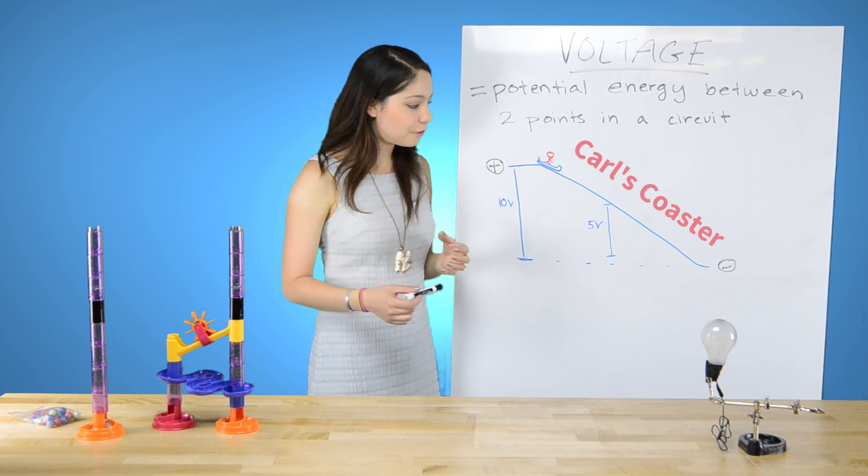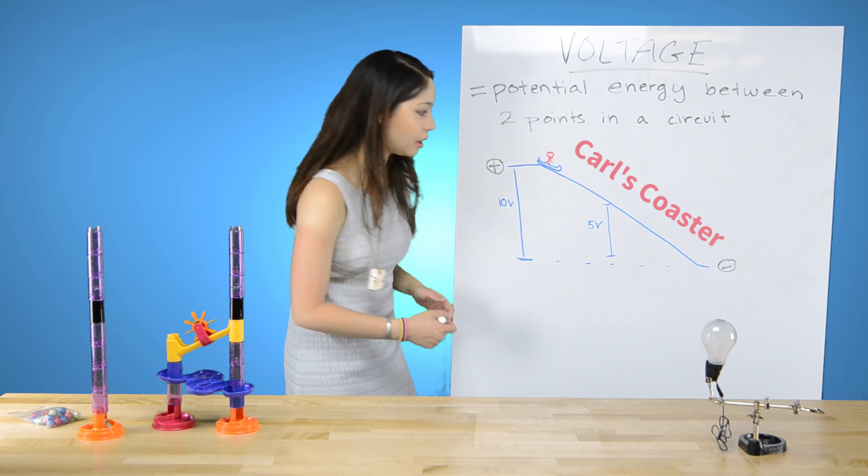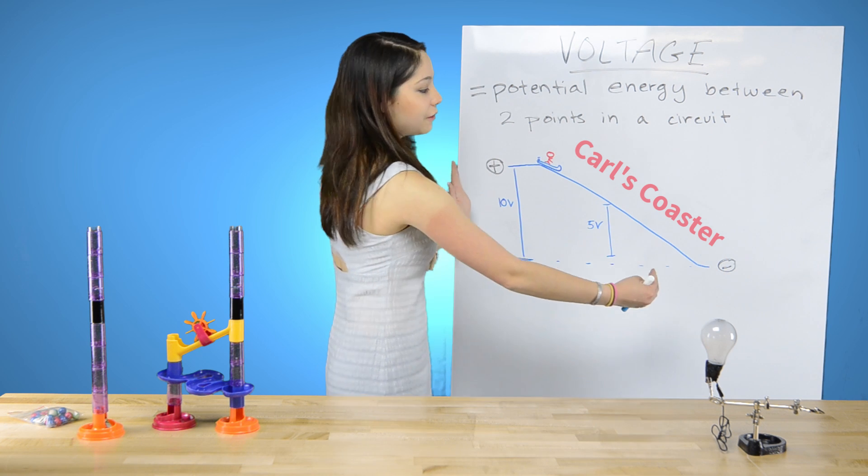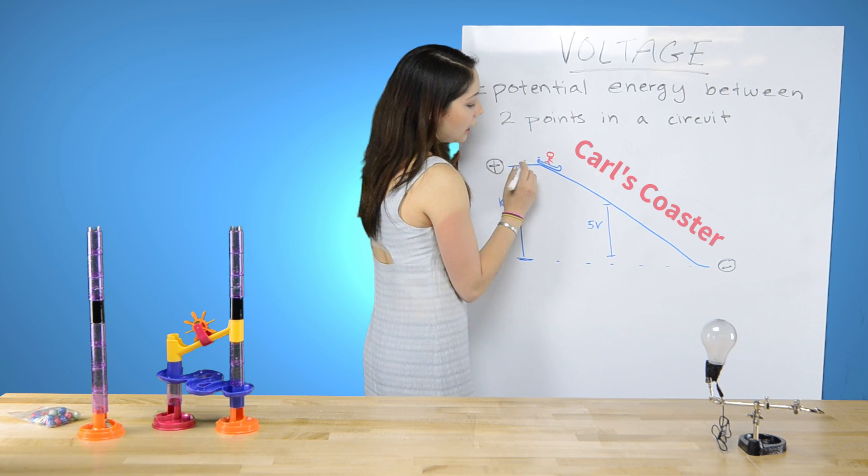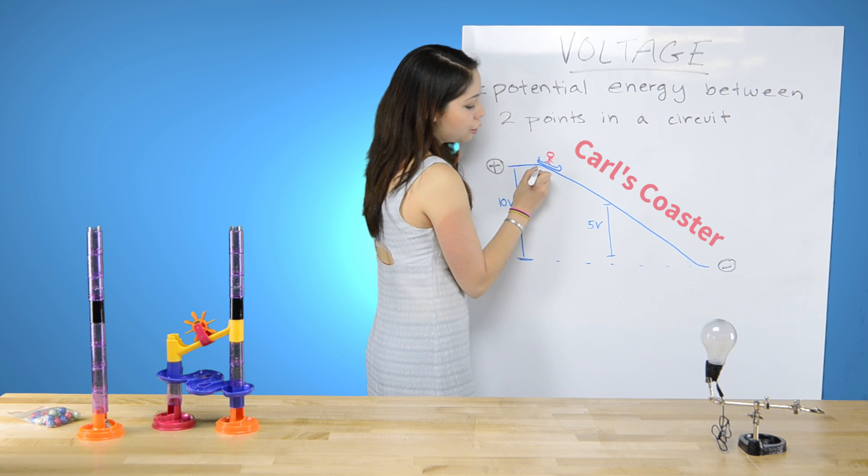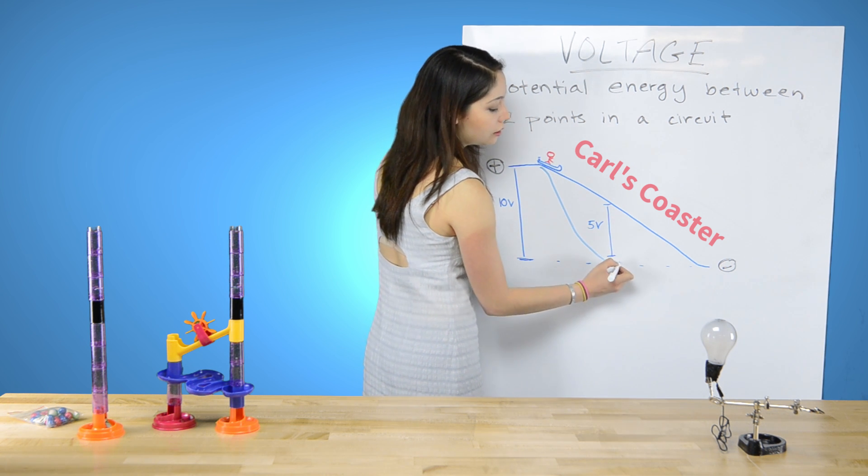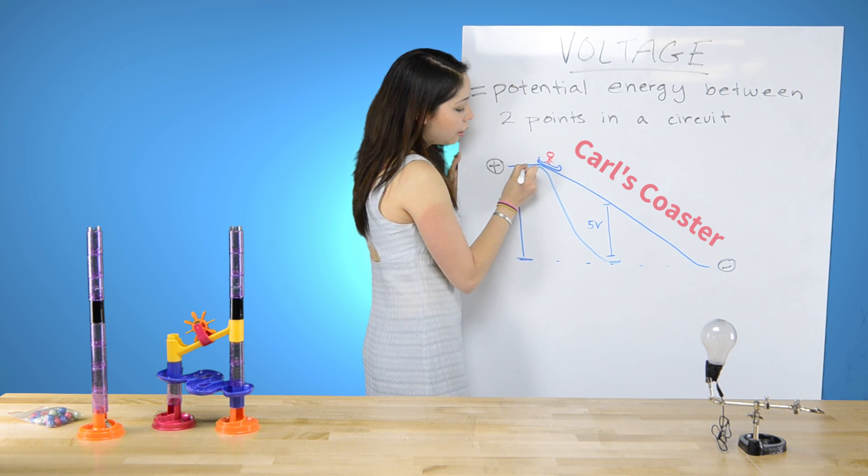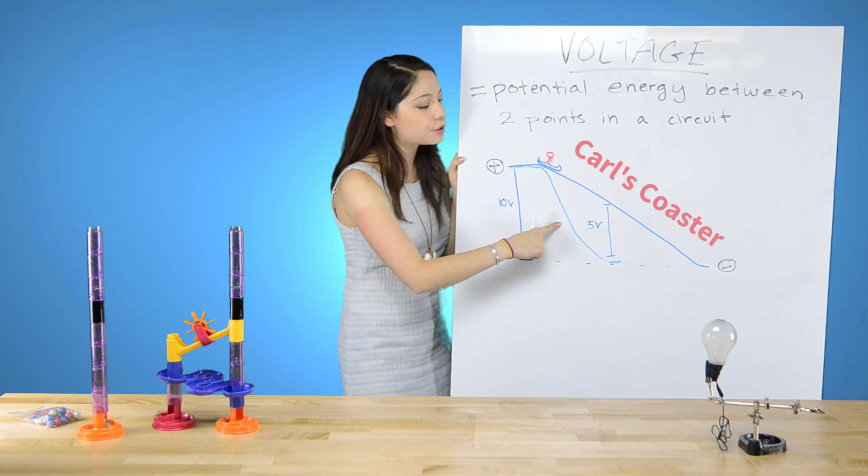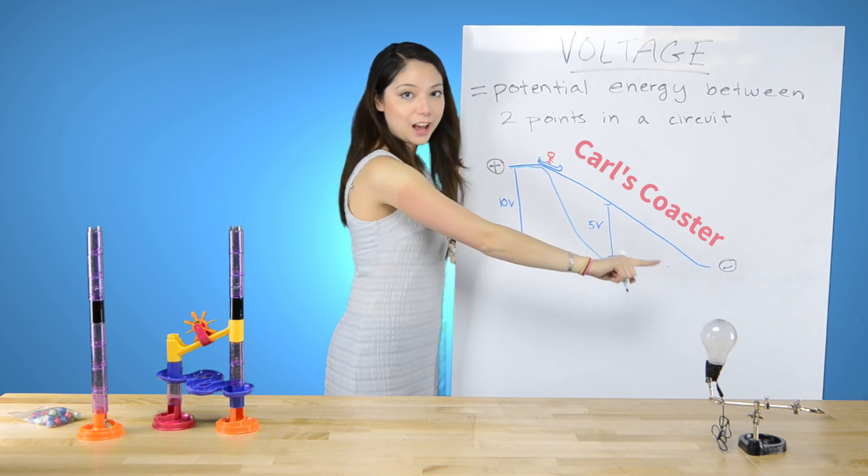And to expand this metaphor even further, if I were to take this roller coaster, and I'm going to do roller coaster number two in green, you can think of this as like time. If I want to increase the current, I can take the same loading platform, but then drop it down like this. And now, Carl is going to have a way more fun roller coaster ride because he has a much higher current. He's going to go down much faster.